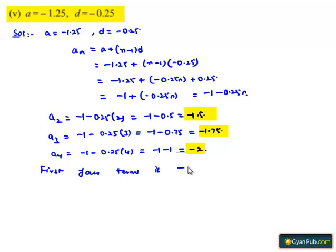The first four terms in the given series are -1.25, -1.5, -1.75, and -2.